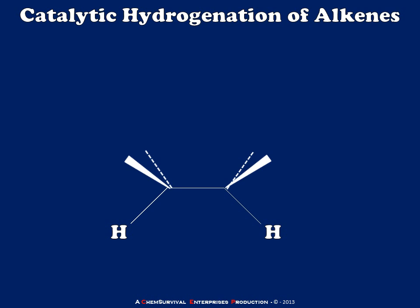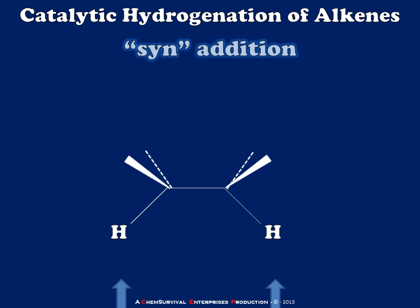What's most important to understand about catalytic hydrogenation of alkenes is that it produces the syn addition product — that is to say that the hydrogens have to be added to the same side of the molecule. In my example here, where we have a completely symmetrical alkene, this is absolutely unnecessary to understand. However, when we start working with unsymmetrical or asymmetrical alkenes, it becomes incredibly important to understand because it will affect the stereochemistry of the products.